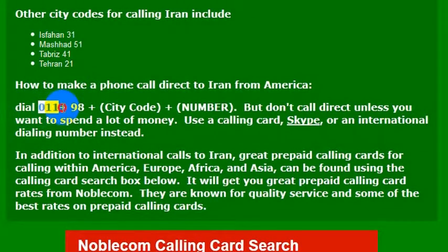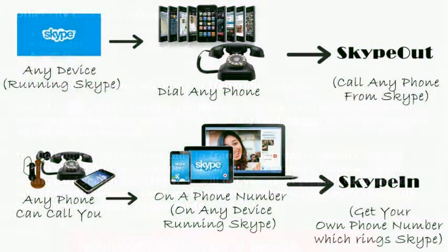You would dial 011 and then 98, which is the country code for Iran. But I wouldn't really recommend calling direct — your phone company will charge you a lot of money. If you want to call a phone number, I really recommend using Skype.